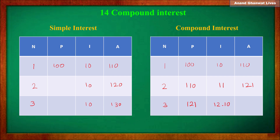So the amount becomes 133.10. After three years on a principal of 100 rupees at 10% pcpa, the amount by simple interest becomes 130, but by compound interest it becomes 133.10 — because in compound interest, interest is charged on the amount of the previous year.